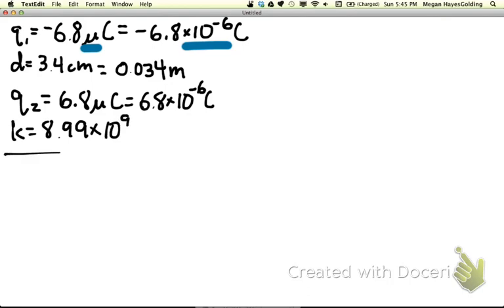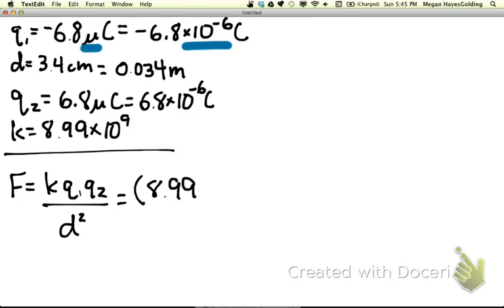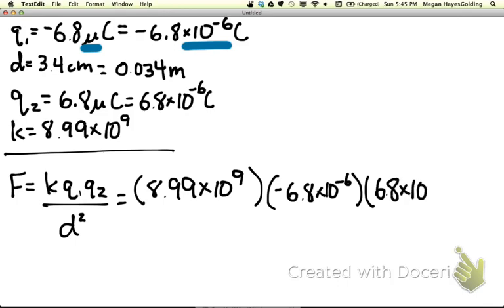So Coulomb's law tells me that force is K Q1 Q2 over D squared. Substituting in here: 8.99, Q1, Q2. That's a lot of writing. And we're going to divide it all by D squared, 0.034 meters squared.